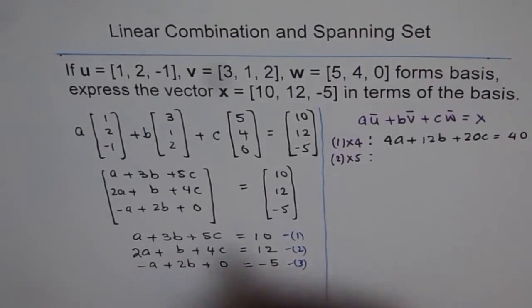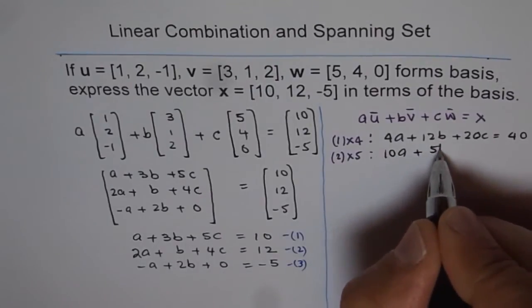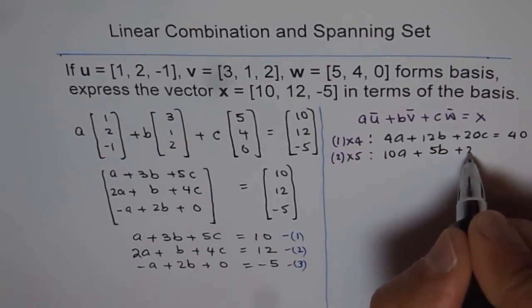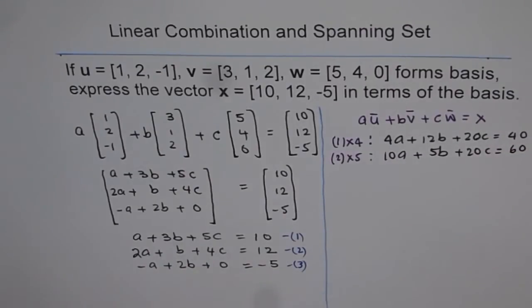And this one by 5 will give me 10A plus 5B plus 20C equals 2, 60. That is what we get.